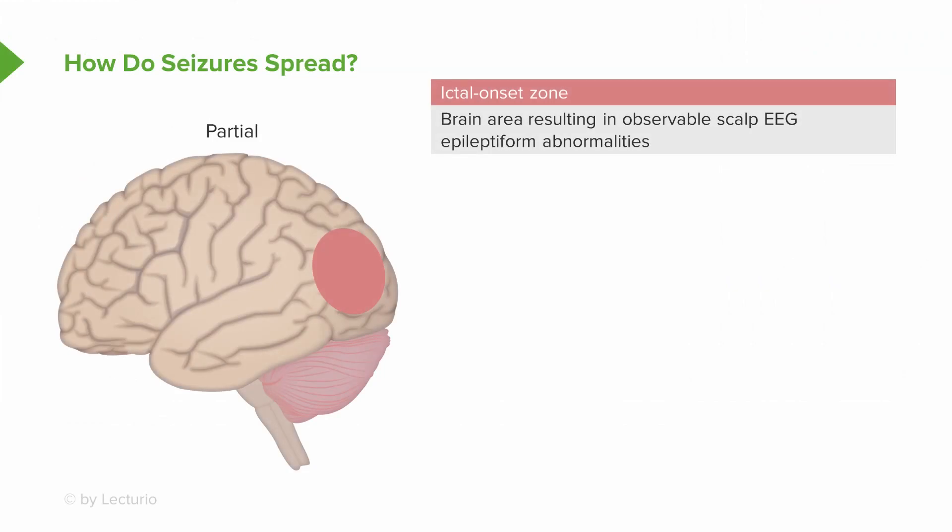The smallest area, the initial seizure focus, is called the ictal onset zone. This is the brain area that's resulting in the observed scalp EEG abnormalities that drive the seizure. This is where the seizure starts on the scalp or where the seizure starts on the brain.